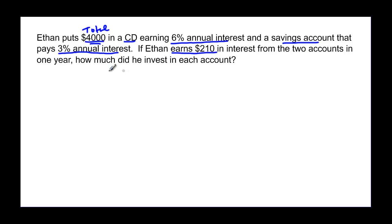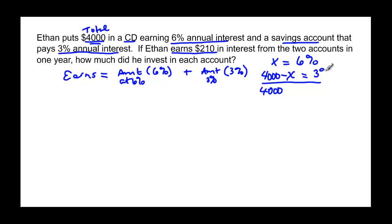He earns $210. Let's put this into perspective. What he earns is made up of the amount that he invests times the 6%. The amount at 6% times that 6% plus the amount at 3% times the 3%. Now we have to do a little bit of fancy thinking here. If he puts x dollars in the 6% and he has a total of $4,000, if you start with $4,000 and you take out x to invest, you have $4,000 minus x.